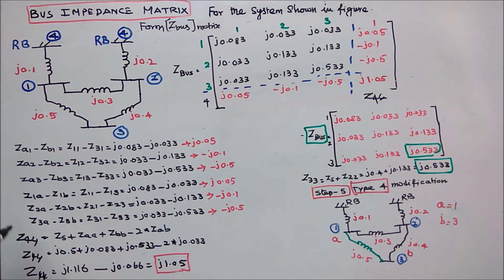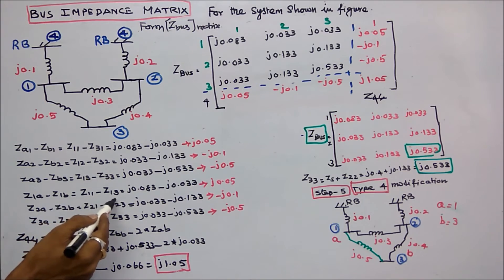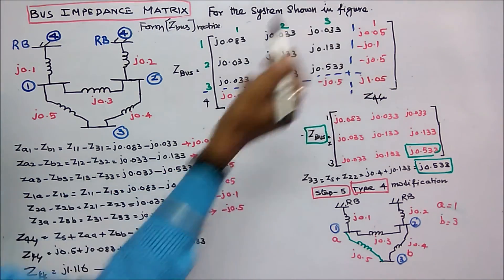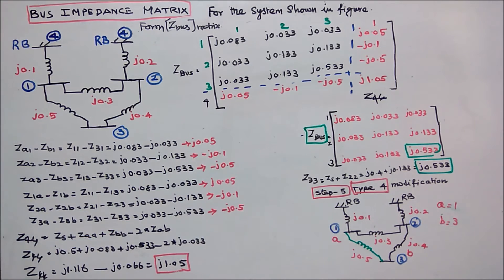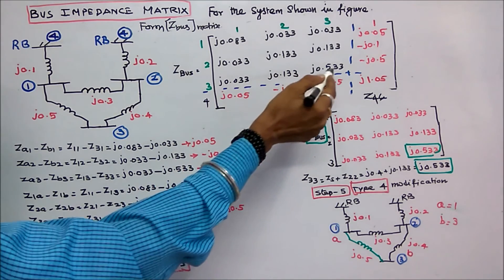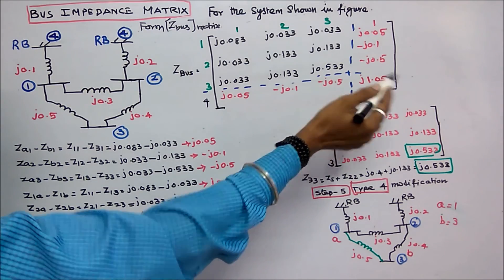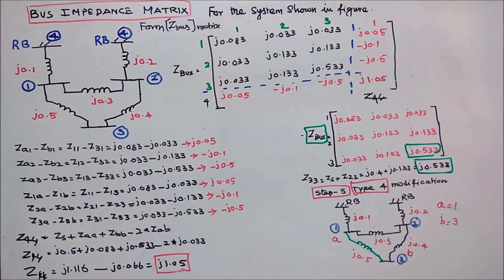Z14 equals Z1a minus Z1b equals Z11 minus Z13 equals j0.05. The next value Z24 is minus j0.01, and Z34 is minus j0.05. Z44 formula is: Zs plus Zaa plus Zbb minus 2 times Zab, where Zs equals j0.5, Z11 equals j0.083, Z33 equals j0.533, and Z13 equals j0.033. Z44 equals j1.05. Now we have a four by four matrix and we have to reduce it to a three by three matrix using Kron's method.